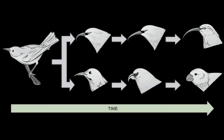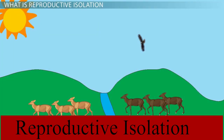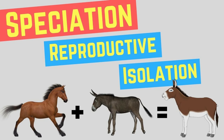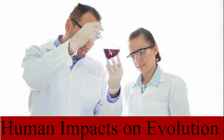Speciation is the process by which new, genetically distinct species evolve, usually as a result of genetic isolation from the main population. One of the factors that contribute to speciation is reproductive isolation — the inability of a species to mate or reproduce with other related organisms. This may be due to different mating sites, the inability of reproductive organs to fit, or genetic barriers between species.